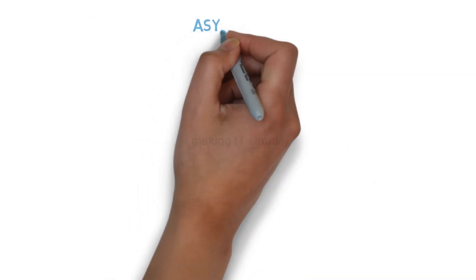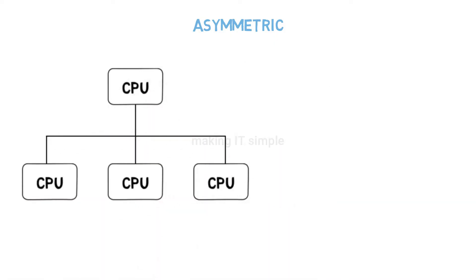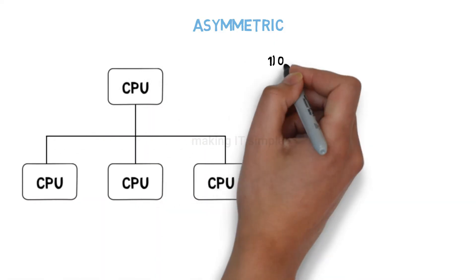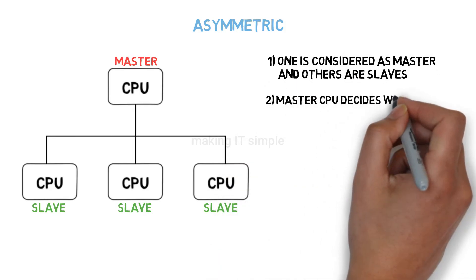Now let's see about asymmetric multi-processing. This is somewhat opposite of symmetric. There is master-slave architecture present in this.